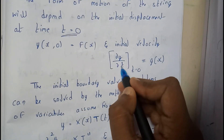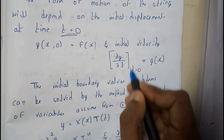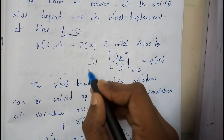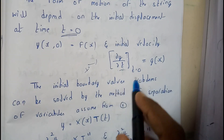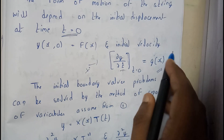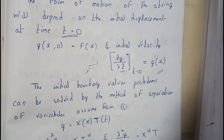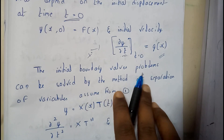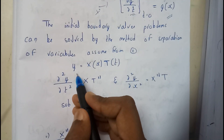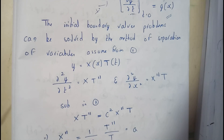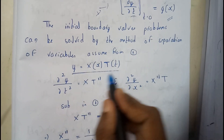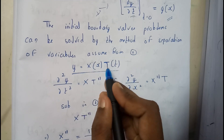So y(x, 0) = f(x), and the initial velocity dy/dt — which is the distance traveled with respect to time — where t = 0 will be g(x). In most conditions it will be equal to zero. The initial boundary value problem can be solved using the method of separation of variables, which we went through previously. This will be the main equation where y is in terms of x and t.